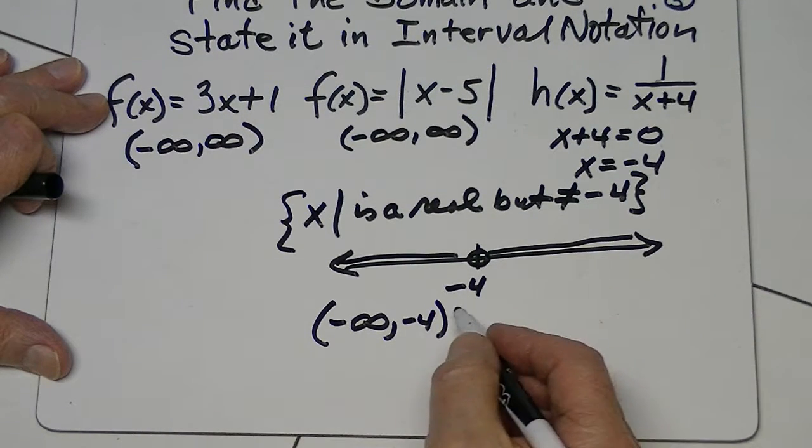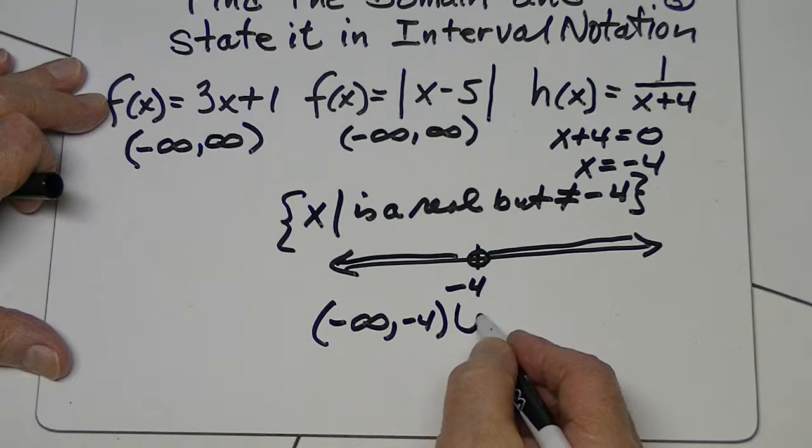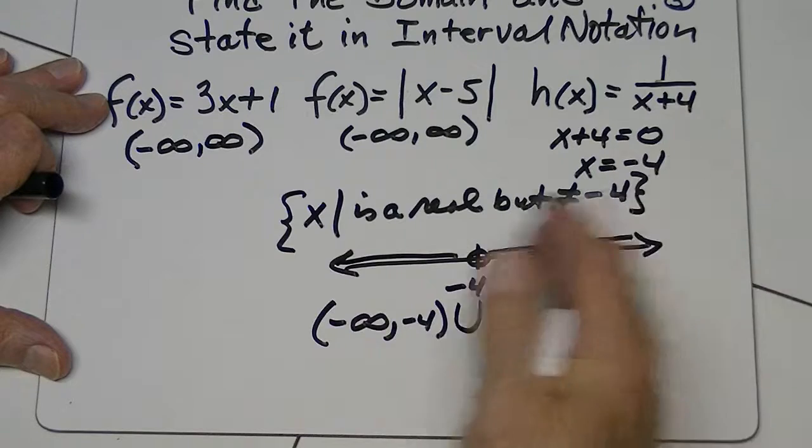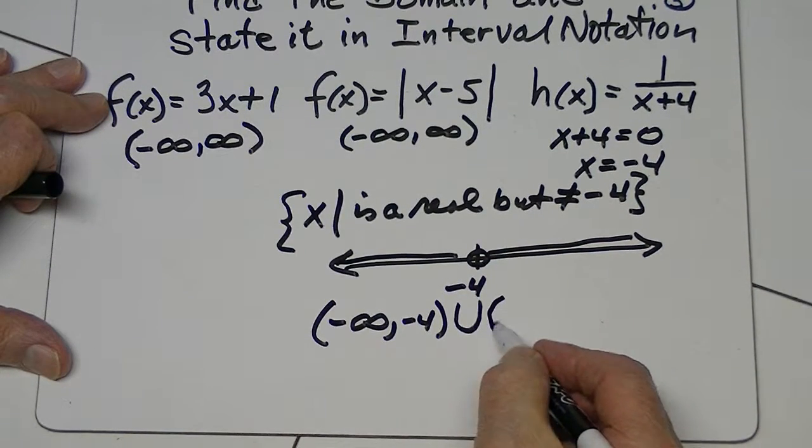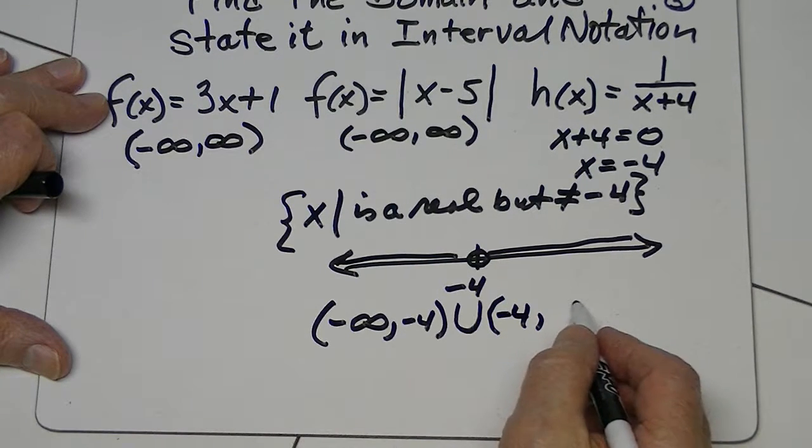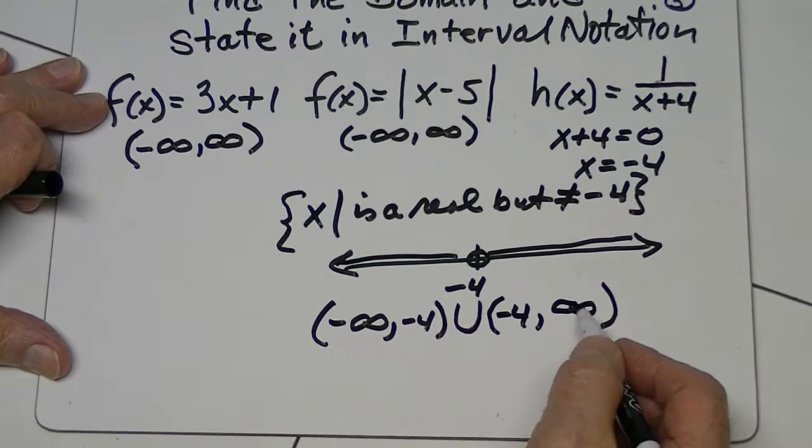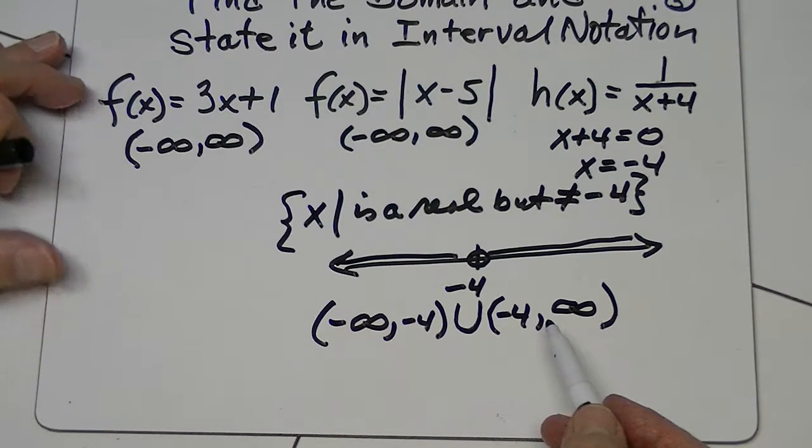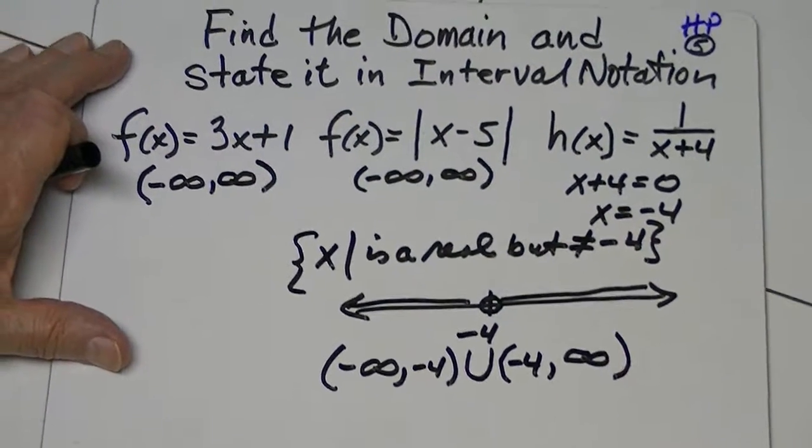And then on the other side, we have to use this symbol, which is a union symbol, meaning that this all ties in together. And then it starts at negative four on this side and it goes up to positive infinity. So you'll see this in some of the answers that they give you. So that's what we have here.